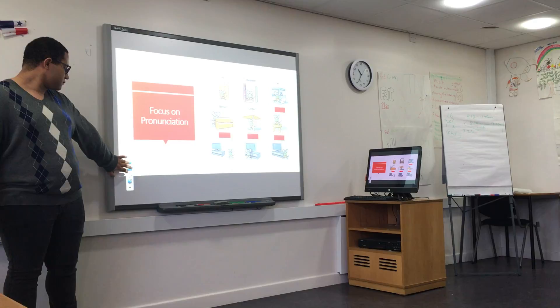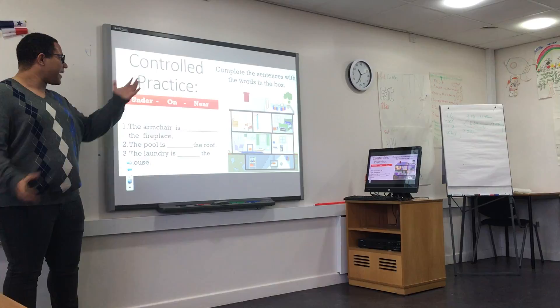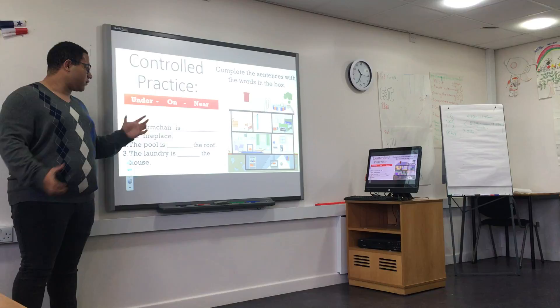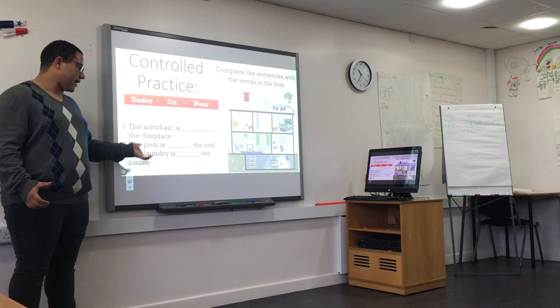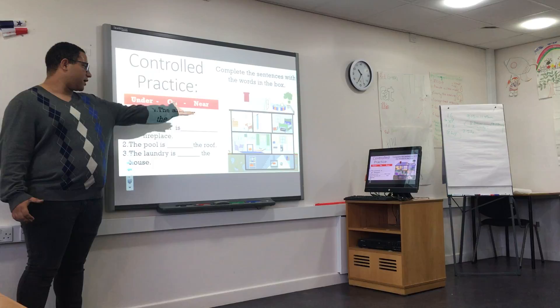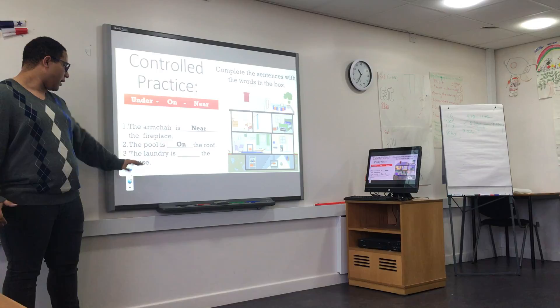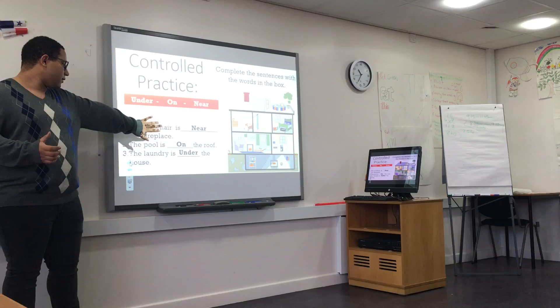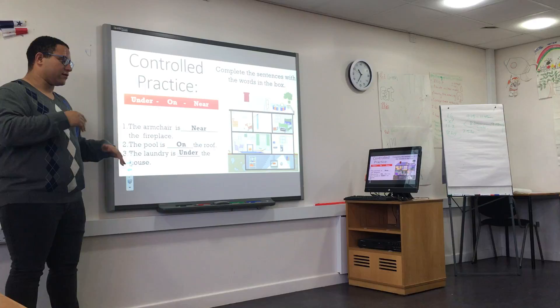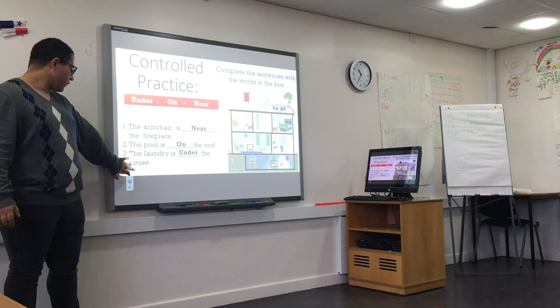The controlled practice is individual, and the different students have to complete one practice about that. For example, we use a picture for identifying different parts of the house in this form. And also we have to use the answers after they have finished the worksheet.